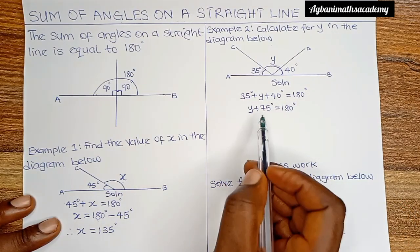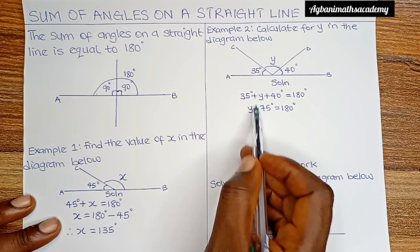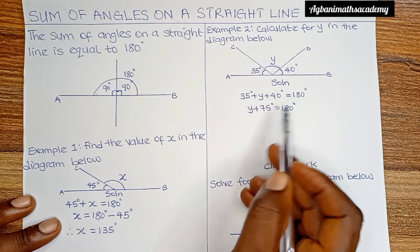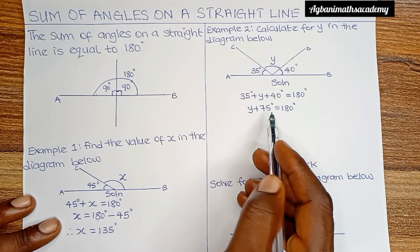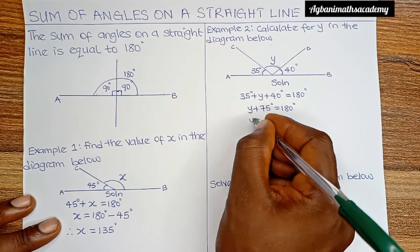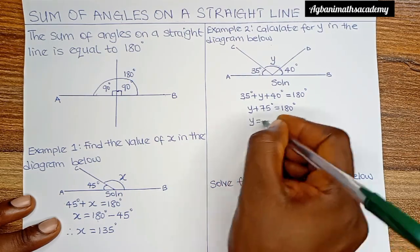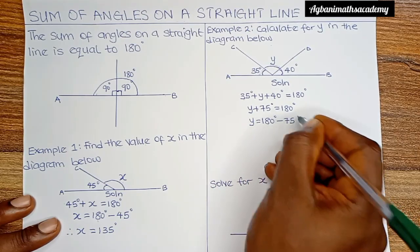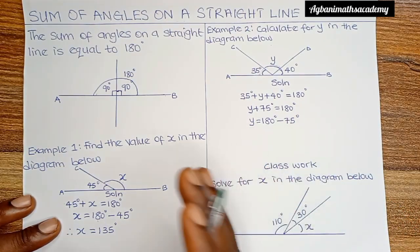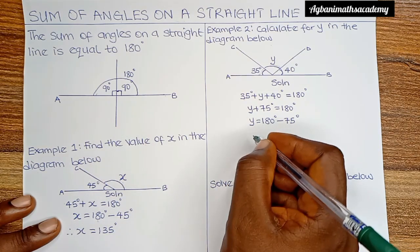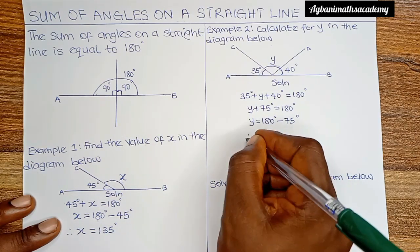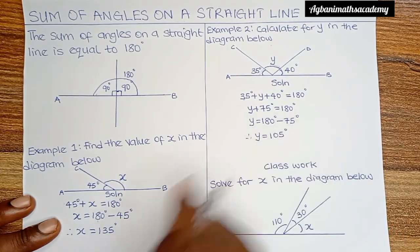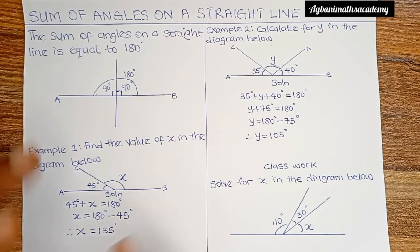To isolate y, we move 75 degrees to the right — the positive sign changes to negative. So y is equal to 180 degrees minus 75 degrees. Subtracting gives us 105 degrees. Therefore y is equal to 105 degrees, and this is the answer to this second question.